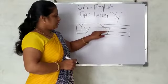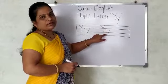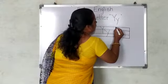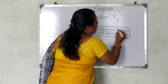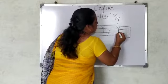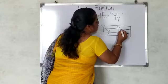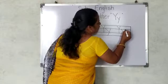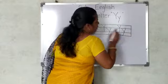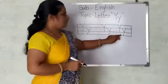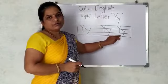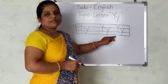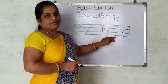Capital Y and small y — see one more time. This is capital Y, in the upper three lines. And small y is a tail letter, so it is in the down three lines. Understood everyone?